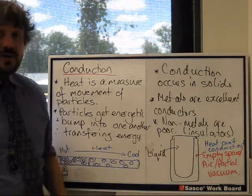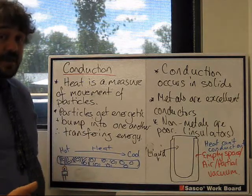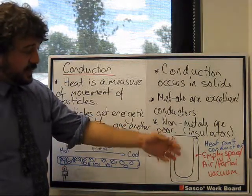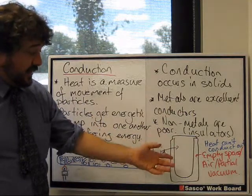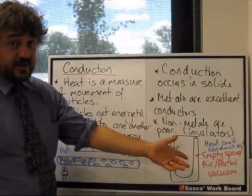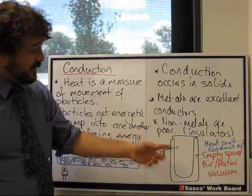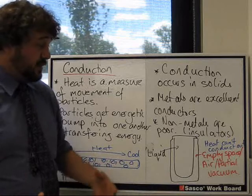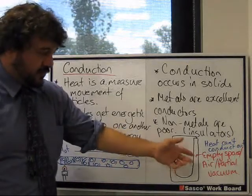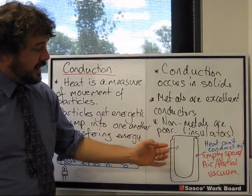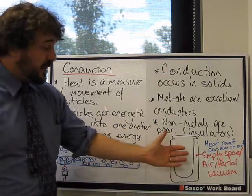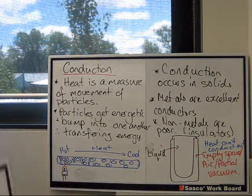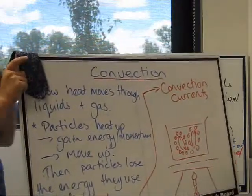If you look at a thermos—well, a Dewar (D-E-W-E-R) is the proper name—you can see how they work. You put your liquid in here, hot if you want it to stay hot, or cold if you want it to stay cold. The blank space here is just air, or it's a vacuum depending on how good the Dewar is. It might be a partial vacuum, closer to a real vacuum, or just gas. The heat is not hot enough to radiate, but it can't conduct through that empty space. Now, if there was gas in there, it could convect.